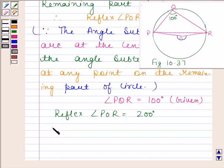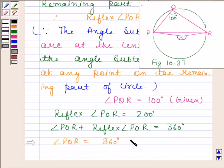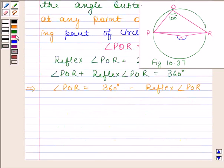we know that angle POR plus reflex angle POR is equal to 360 degrees. So, this means angle POR is equal to 360 degrees minus reflex angle POR.